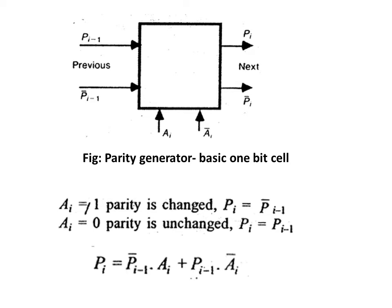When you clearly analyze the previous figure, you will come to know one logic. If you apply ai equal to 1, then the next parity output will change — that is pi equals pi minus 1 bar. Or else, if ai equals 0, then the parity remains unchanged — that is pi equals pi minus 1.